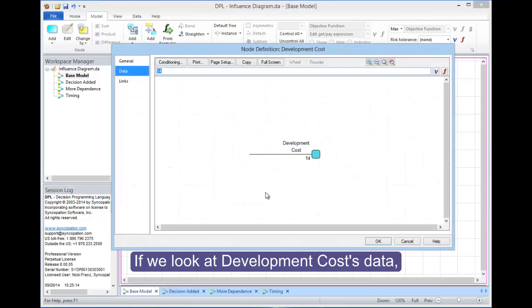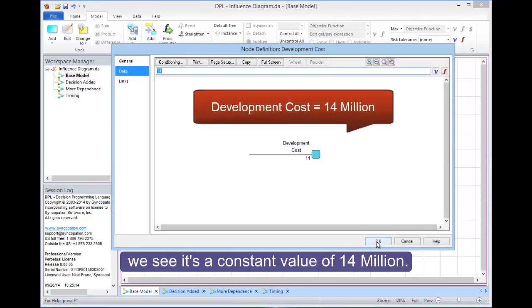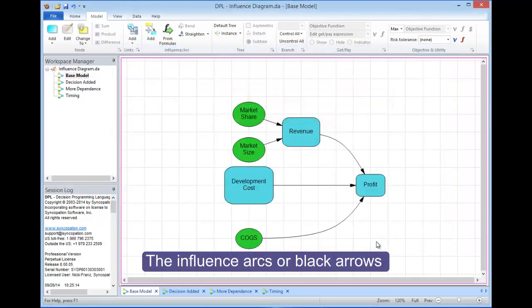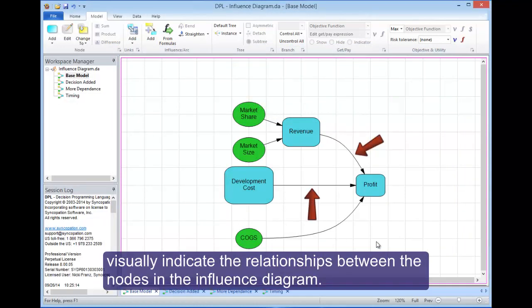If we look at development cost data, we see it's a constant value of 14 million. The influence arcs, or black arrows, visually indicate the relationships between the nodes in the influence diagram.